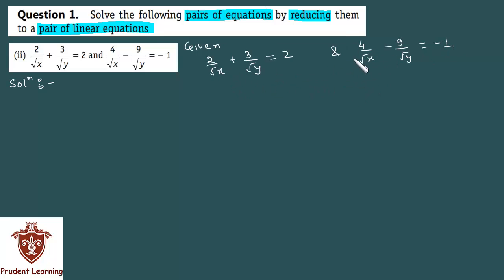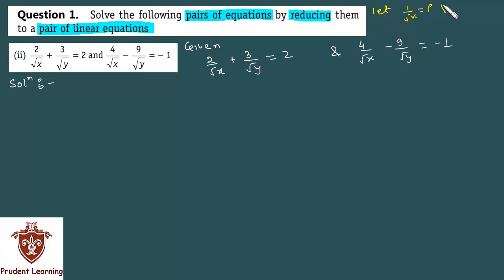If you see both equations, then 1 by root x and 1 by root y are common in both equations. Since they are common in both equations, let us assume that 1 by root x is equal to p and 1 by root y is equal to q.